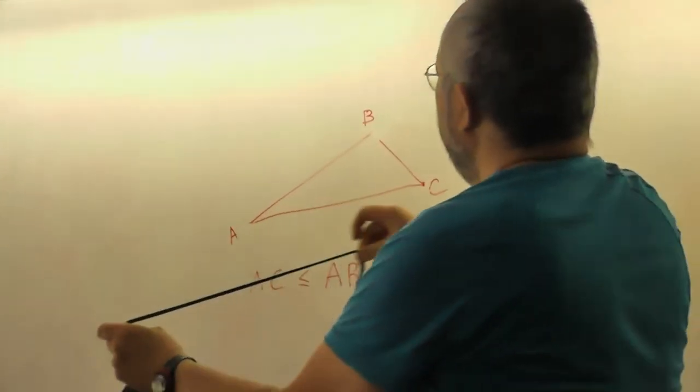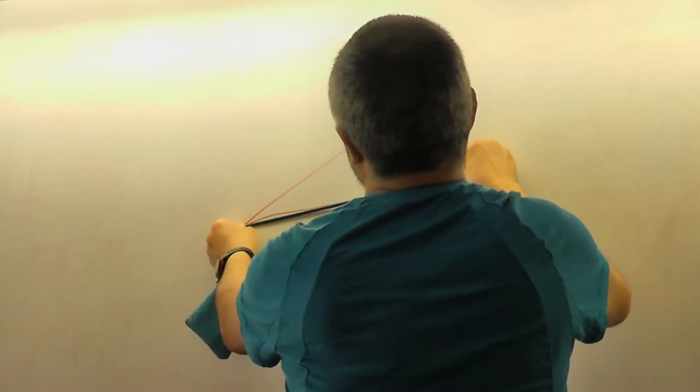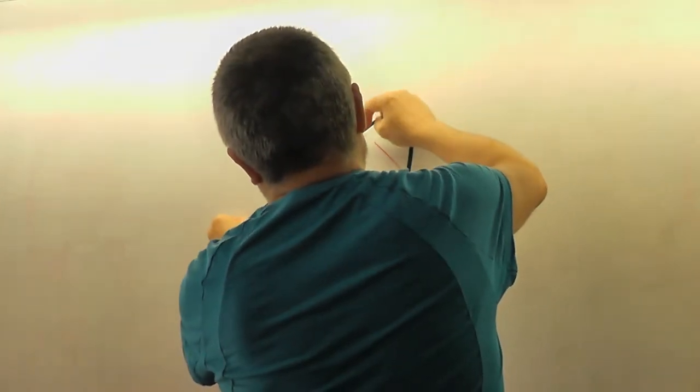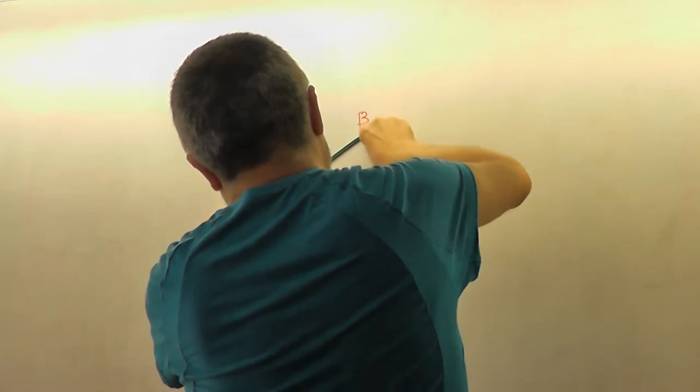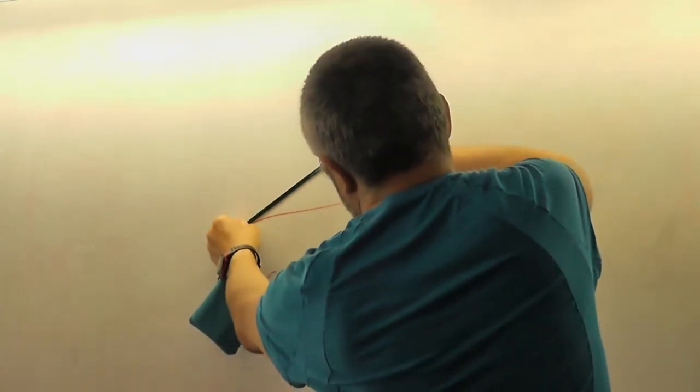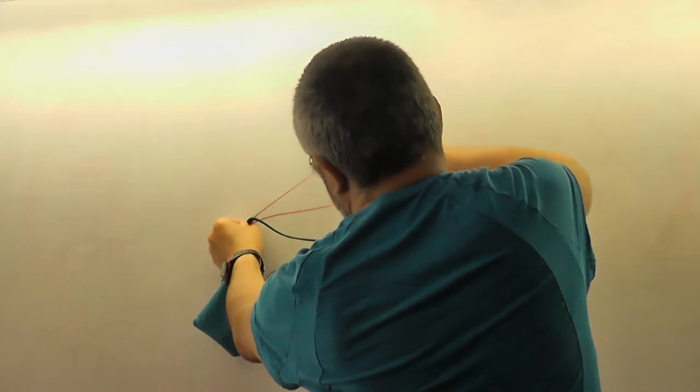And so this is AB plus BC, but if we put it here, of course we get a longer signal. So this line, this is AB plus BC and it is bigger than AC, you see that AC is smaller.